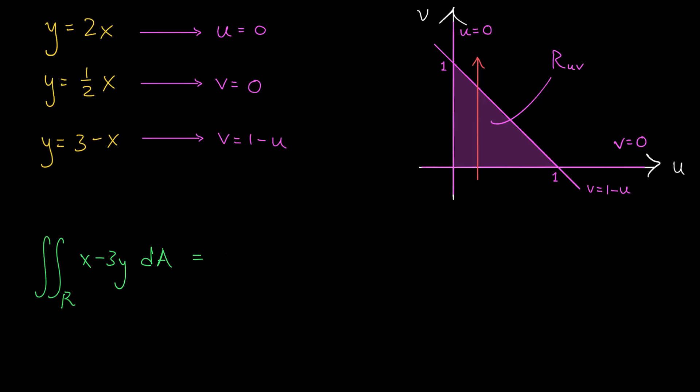My change of variables formula tells me that this integral, the one that I'm after, is really the integral over r_uv. So in this case u goes from 0 to 1, v goes from 0 to 1 - u. I should replace x and y in my integrand using their definitions in terms of u and v. If you'll recall, x was 2u + v and y was u + 2v. I multiply by the absolute value of my Jacobian, the absolute value of 3, and since I'm integrating this as a region of type 1, I have dv du.